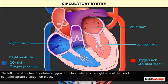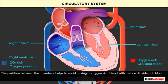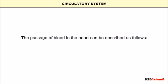The left side of the heart contains oxygen-rich blood, whereas the right side of the heart contains carbon dioxide-rich blood. The partition between the chambers helps to avoid mixing of oxygen-rich blood with carbon dioxide-rich blood. The passage of blood in the heart can be described as follows.